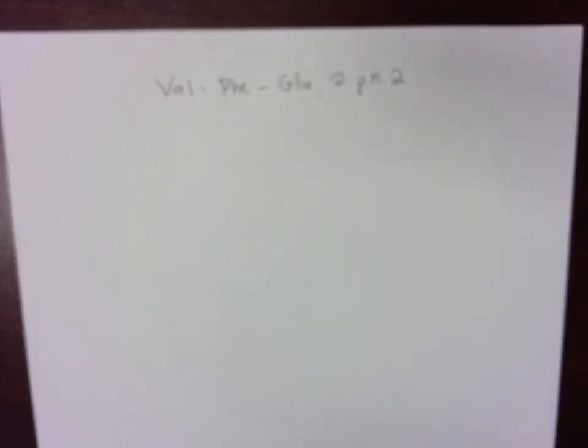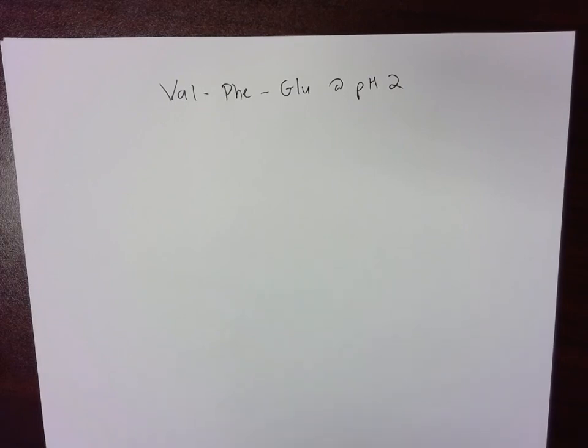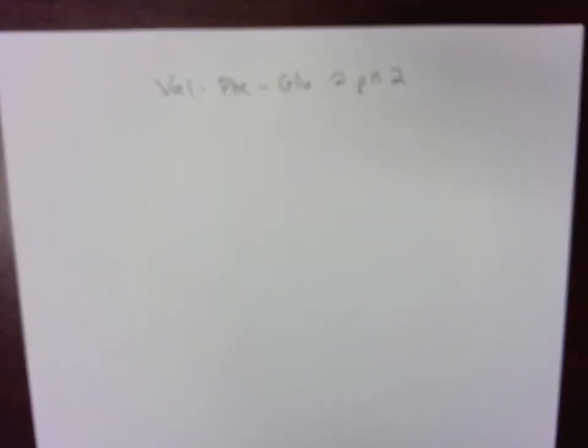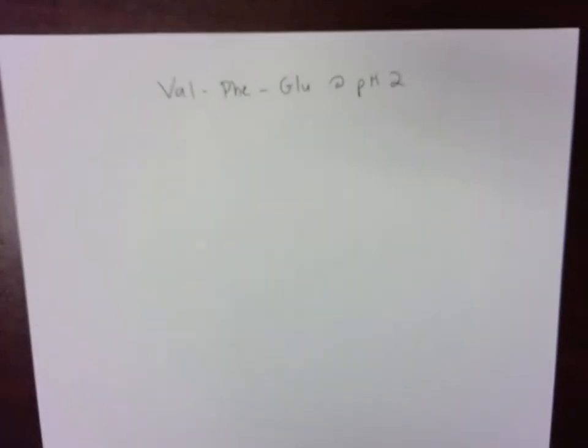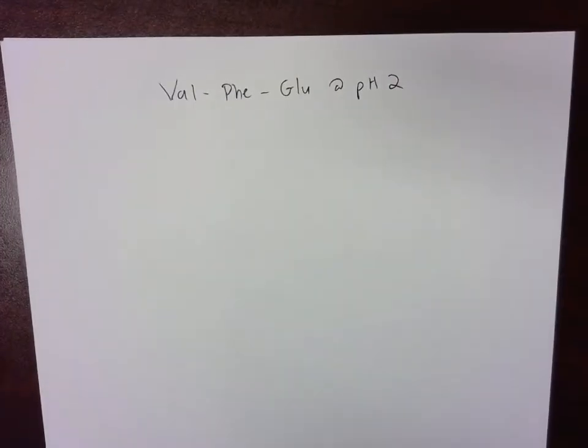All right, in this video I'm going to show you how to draw a tripeptide: valine, phenylalanine, and glutamic acid at pH 2. In a previous video I showed you how to draw valine, phenylalanine, and aspartic acid at pH 7. But in this particular one we're going to do an acidic pH, so pH 2.